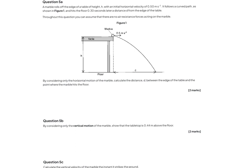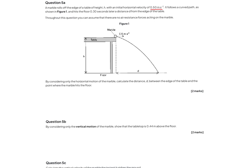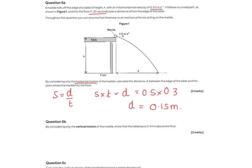Final question, question 5. A marble rolls off the edge of a table of height h with an initial horizontal velocity of 0.50 metres per second, hits the floor 0.3 seconds later with no air resistance. Considering only the horizontal motion, calculate the distance d. The horizontal velocity stays constant, so we use speed equals distance divided by time, rearranged to distance equals speed times time: 0.5 times 0.3 equals 0.15 metres. That is our horizontal distance d, not the height.